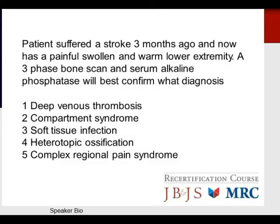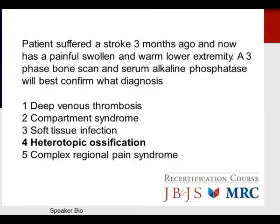Question: A patient suffered a stroke three months ago and now has a painful, swollen, and warm lower extremity. A three-phase bone scan and serum alkaline phosphatase will confirm what diagnosis in most cases? The two main considerations are heterotopic ossification or complex regional pain syndrome. The appropriate response is heterotopic ossification, secondary to the traumatic brain injury, which is commonly seen in the orthopedic realm post-trauma.